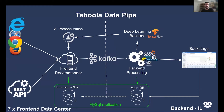Zooming out and looking at the overall design, things are not that simple. In order to withstand that large amount of requests, we have seven front-end data centers spread across different regions of the world, each with hundreds of front-end recommender services. Since we recommend globally, we need our servers to be as close as possible to the end user to provide a fast and reliable experience. And because services need so much information, we need to have a local copy of all the data on the front-end data center.